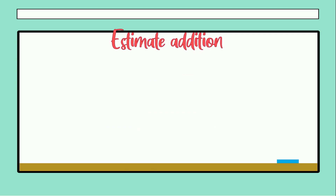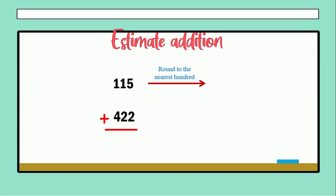Now let's check the next example, but this time with hundreds. We have 115 plus 422. In this case we don't round to the nearest ten — we will round to the nearest 100. So 115 is between 100 and 200, but the nearest is 100. For the second addend, 422 is between 400 and 500, but it is closer to 400.